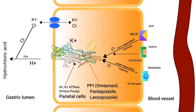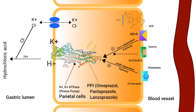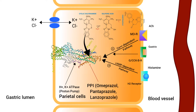Proton pump inhibitors are pro-drugs that require activation in an acid environment. After absorption into the systemic circulation, the pro-drug diffuses into the parietal cells of the stomach and accumulates in the acidic secretory canaliculi. Here, it is activated to sulfenamide. The activated form then binds covalently with sulfhydryl groups of cysteines in the hydrogen-potassium adenosine triphosphatase, irreversibly inactivating the pump molecule. Acid secretion resumes only after new pump molecules are synthesized and inserted into the luminal membrane.